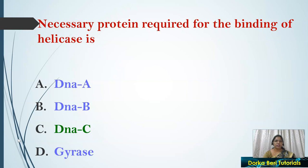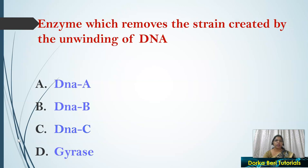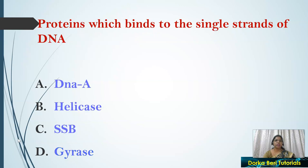Next question: The necessary protein required for the binding of helicase is DNA C. In order to bind helicase, the presence of DNA C protein is needed. The enzyme which removes the strain created by the unwinding of DNA is gyrase.